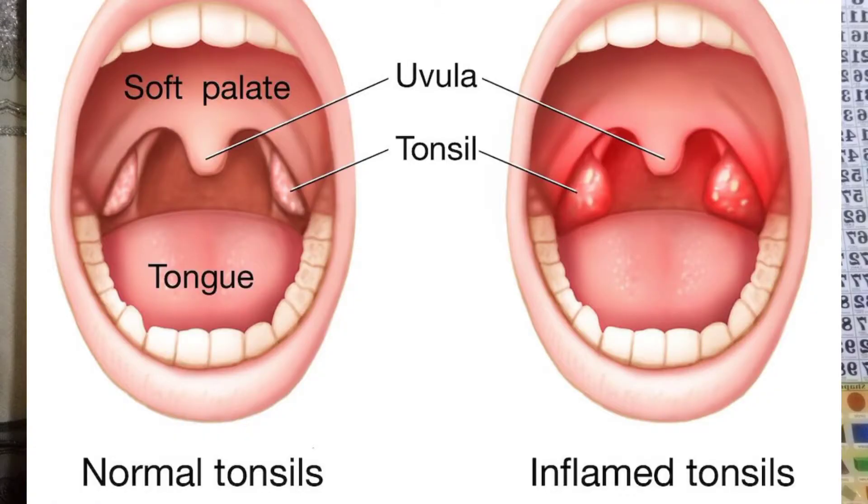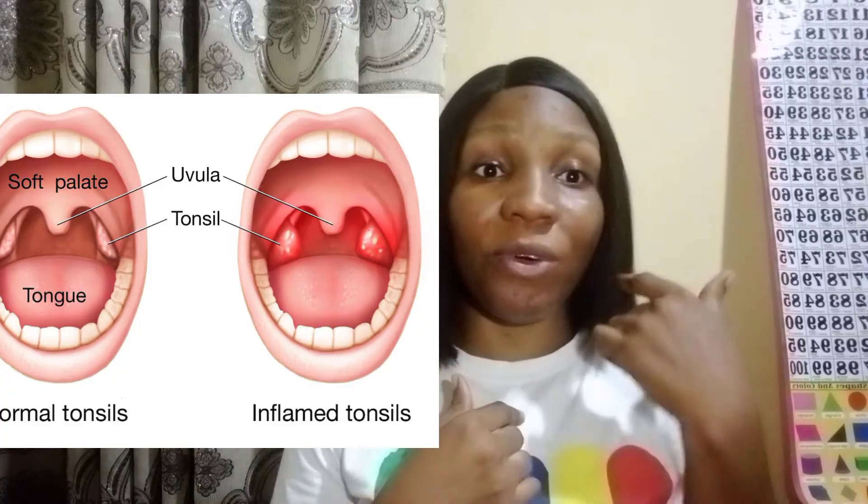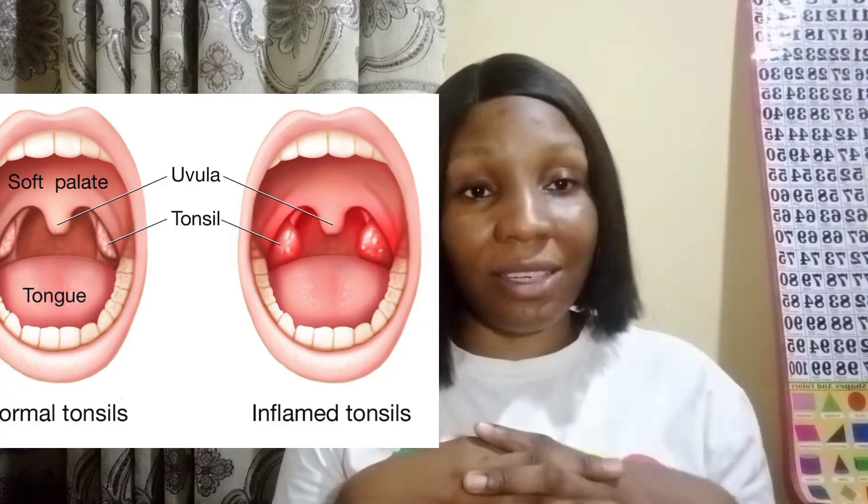Hello everyone, welcome to my channel. Today I'll be talking about tonsillitis — what tonsillitis is, the causes, symptoms, and treatments. Tonsillitis is an infection of the tonsils. The tonsils are two lymph nodes located at the back of your throat; they are oval shaped. If you open your mouth wide enough, you're going to see your tonsils at the back of your mouth, one on each side.